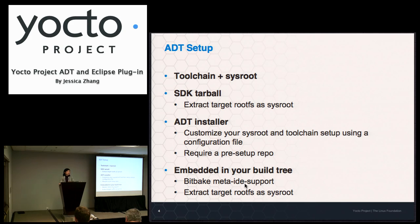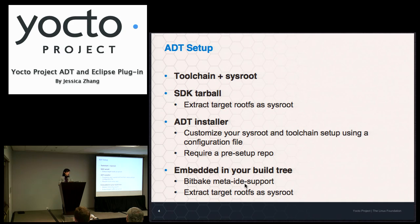There are three ways to set up your ADT cross-development environment. The first way is the SDK tarball. That's when you do a BitBake meta-toolchain, or meta-toolchain GMAE, or SDK. The new 1.3 feature is to create a toolchain tarball matching your target image by doing: bitbake your-image-name dash populate-SDK. With this tarball, it basically contains both your toolchain and SysRoot.